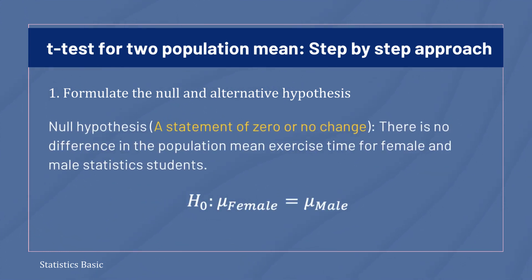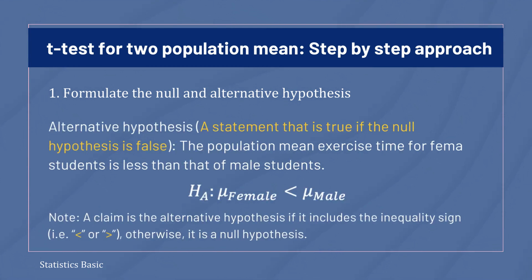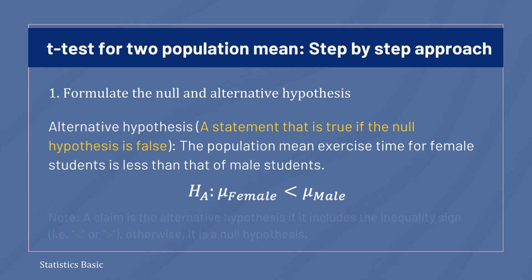A null hypothesis is defined as a statement of zero or no change. This means the null hypothesis says that there is no difference in the population mean exercise time for female and male statistics students. An alternative hypothesis is defined as the statement that is true if the null hypothesis is false. This means the alternative hypothesis states that the population mean exercise time for female students is less than that of male students. This is a left-tailed test because the alternative hypothesis includes the less than sign.